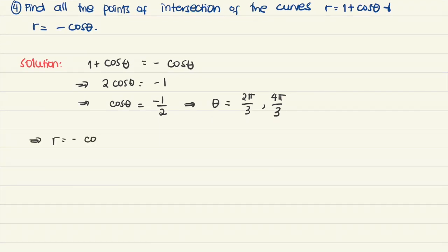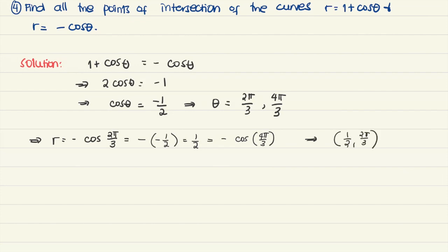Computing for r, we can substitute into either of the two curves — choosing negative cosine theta gives r equals 1 half. That value is the same for both 2 pi over 3 and 4 pi over 3. So we now have two points: (1/2, 2 pi over 3) and (1/2, 4 pi over 3).